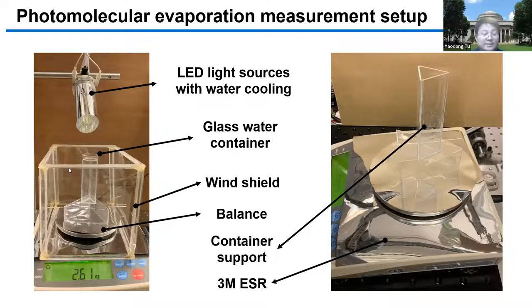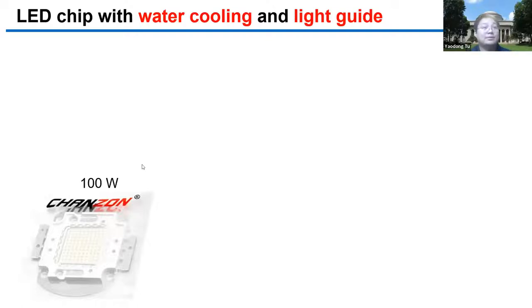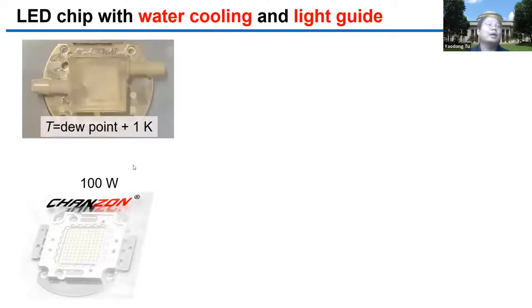Secondly, we need to cool the light source. If we didn't cool the light source, the hot light source will emit infrared light that will heat up the water or the surrounding air. Here, we use a 100-watt LED chip as the light source with water cooling. Water cooling has a large cooling capacity, and more importantly, compared to air cooling, it doesn't disturb the air flow around the water sample.